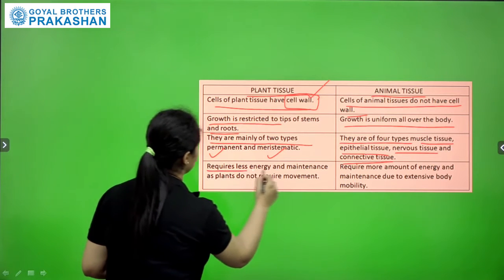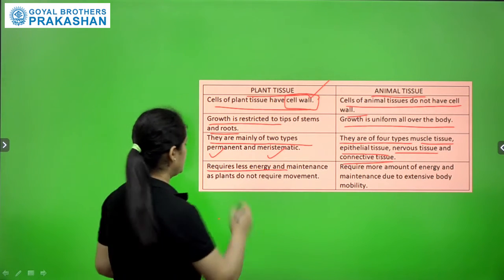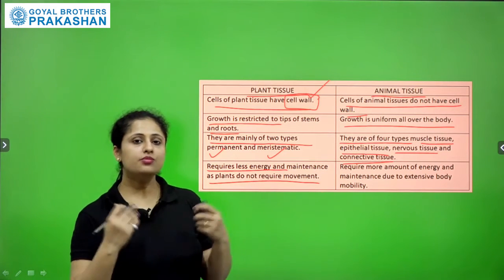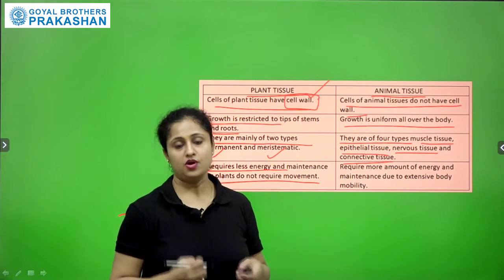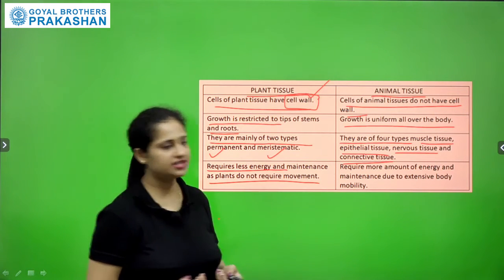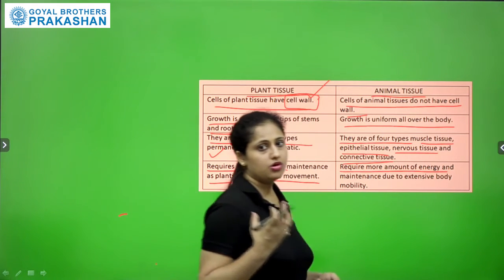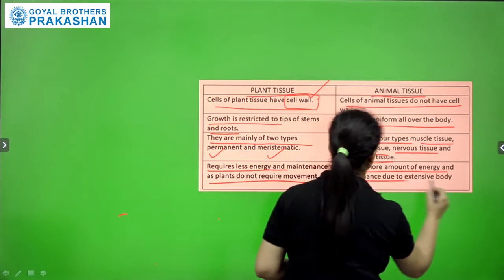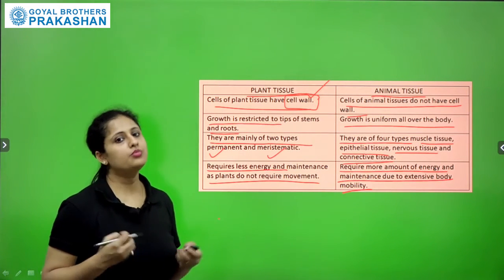Plant tissues require less energy and maintenance, as plants do not require movement. Since movement is not involved, there is no need for extra energy. Animal tissues require more energy and maintenance due to extensive body mobility or movement.